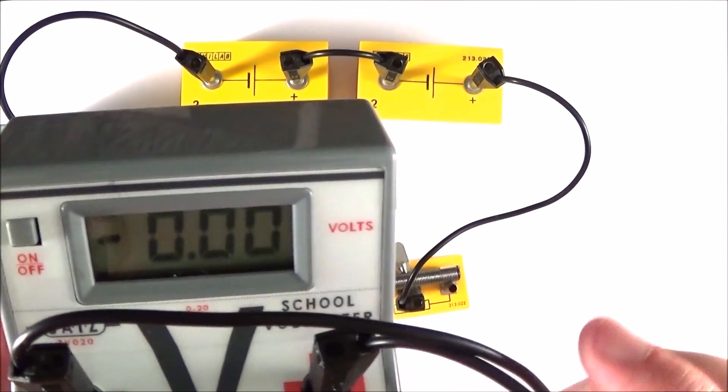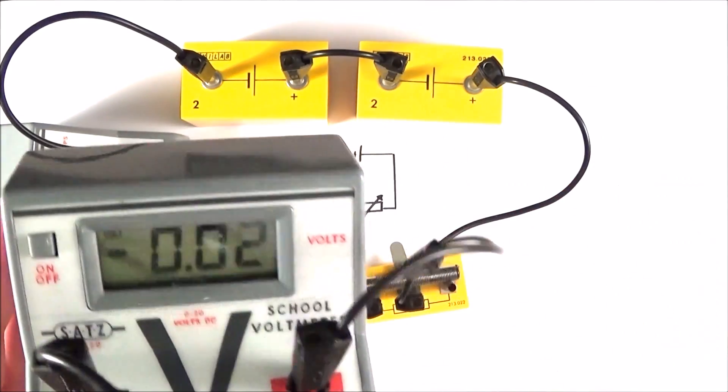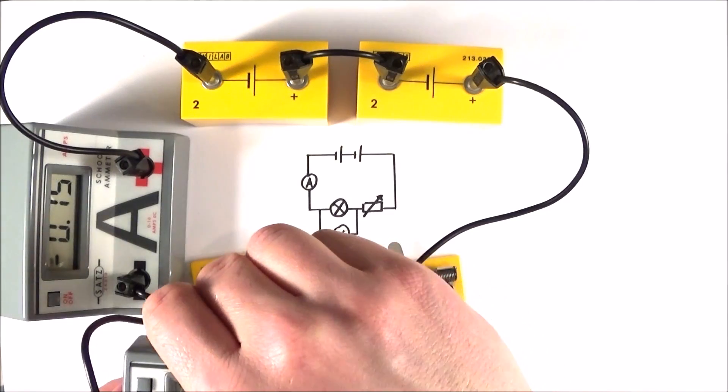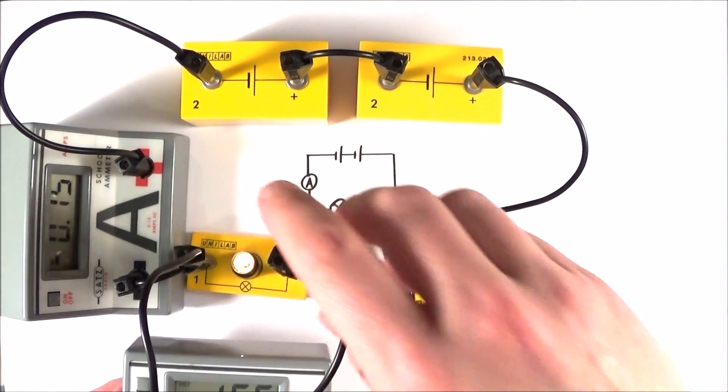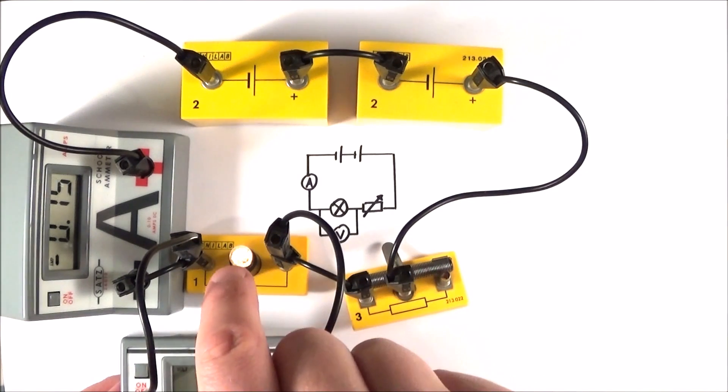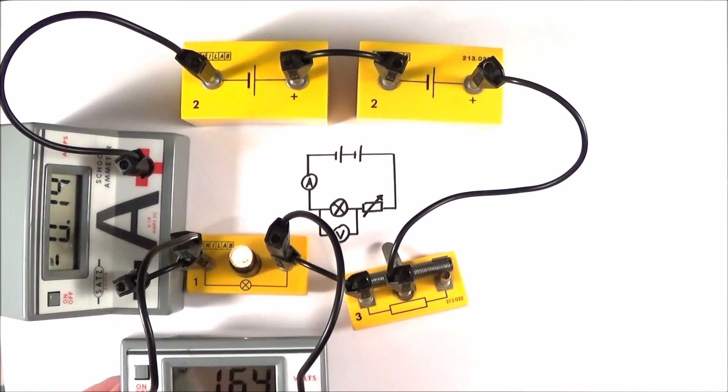So the final thing I'm going to add is my voltmeter, which is going to go in parallel with the component I'm looking at. As I plug this in, we should see that there's still a reading on the voltmeter, the lamp still stays lit up, and we have the same current flowing.